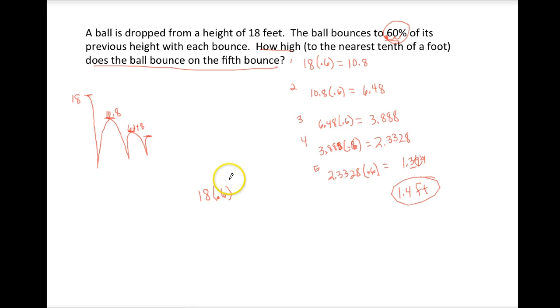And we're going to write that as .6 to the n or k or whatever variable you want. And this will tell you how high it is on a specific bounce.